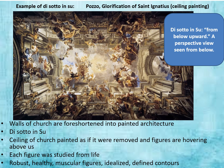Another vocabulary word is 'di sotto in sù,' meaning literally 'from below upward'—a perspective view seen from below. In the example 'Glorification of Saint Ignatius,' which is a ceiling painting, the walls of the church are foreshortened into painted architecture, so we feel as if there's architecture jutting up into the sky when in reality this is an illusion. It looks as if the ceiling is opening up to the clouds, to the heavens. The figures appear to hover above us, and the intention is for us to feel this illusion as we gaze upward. Each figure was studied from life—they're very robust, healthy, muscular figures, highly idealized with very defined contours.